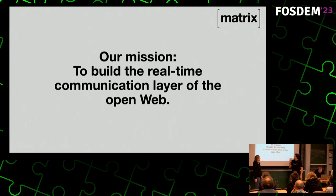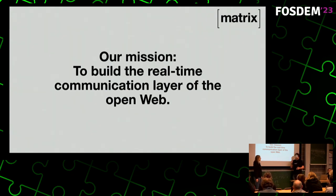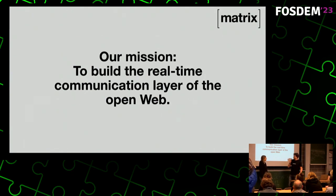Our mission is slightly changing this year, because I think we're converging on Matrix trying to be the real-time communication layer of the open web. It's kind of been the idea all along — it sounded a bit over the top to put in writing when we began, but increasingly that's where things are moving. ActivityPub is more of a real-time micro-blogging or information-sharing layer — RSS on steroids — whereas with Matrix we're really going for low-latency, real-time instant messaging and voice.